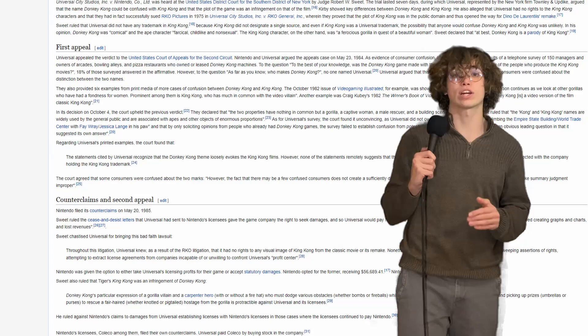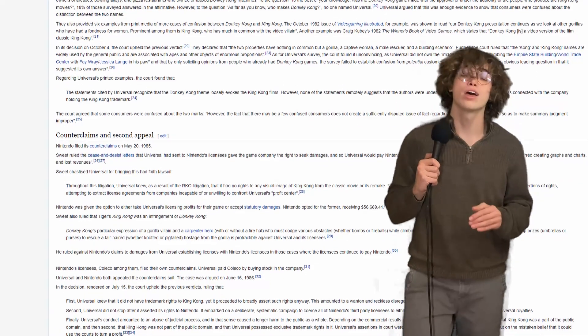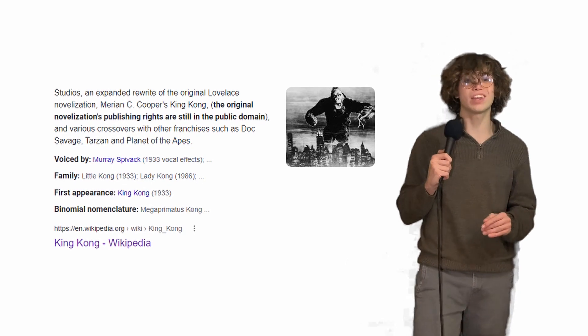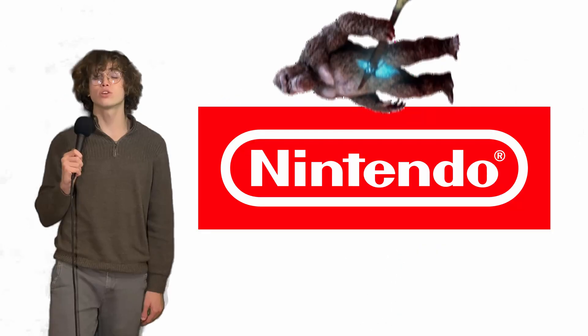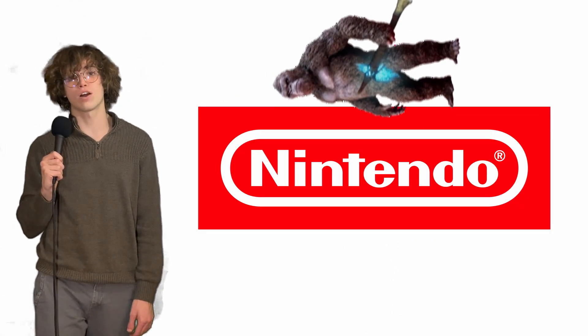This case goes through the whole ringer, ending up in court three separate times. But in the end, John Kirby is able to prove that King Kong is part of the public domain, and not owned by Universal at all. So even if Nintendo did take from King Kong, they weren't infringing on anything.